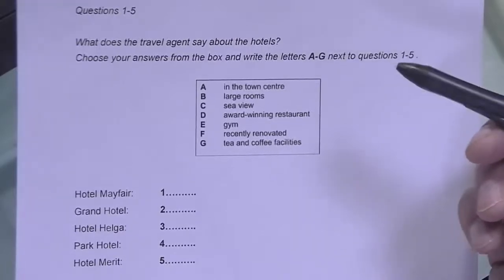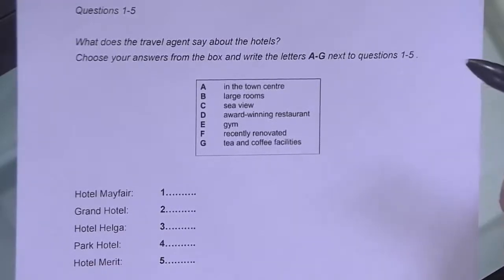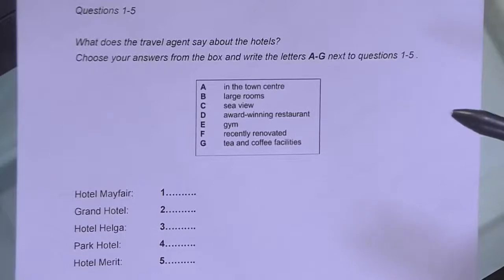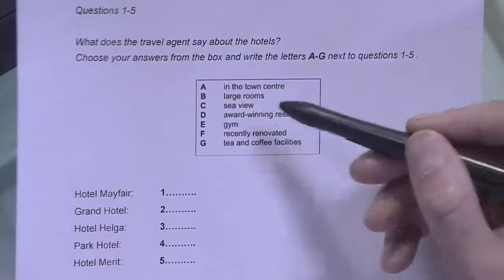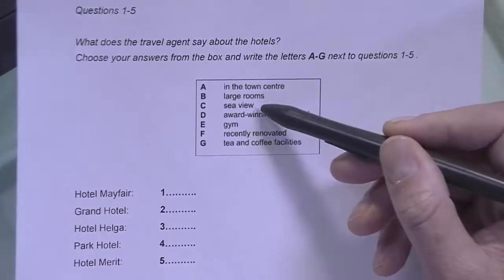Consider that the speaker might mention other options but rule them out so that they're not correct. For example, they might say that the hotel doesn't have a view of the sea, so that option would be wrong. The most important of the steps I've just described is to look at the options as you are listening. This will make it easier to match them to the question numbers.